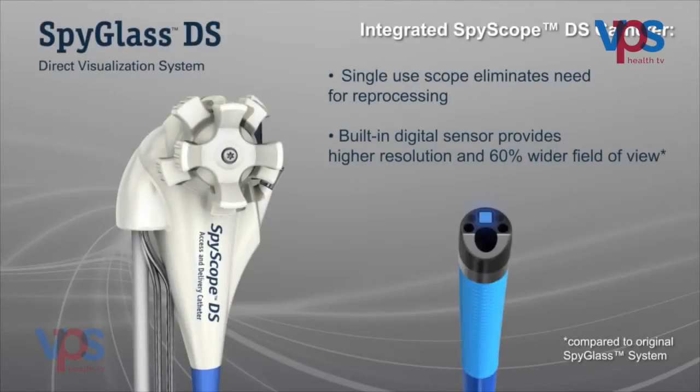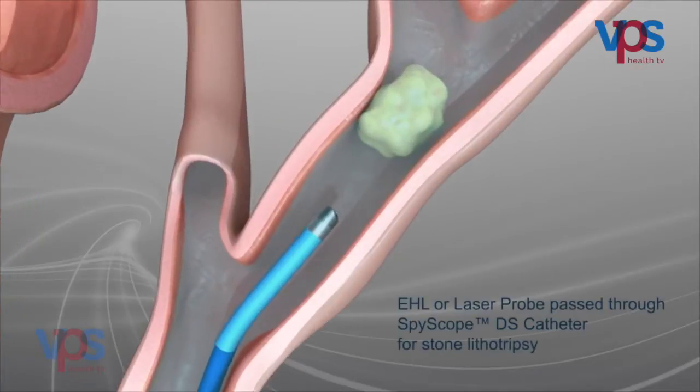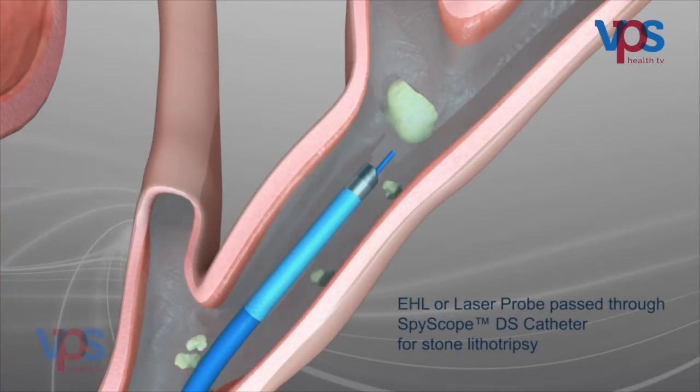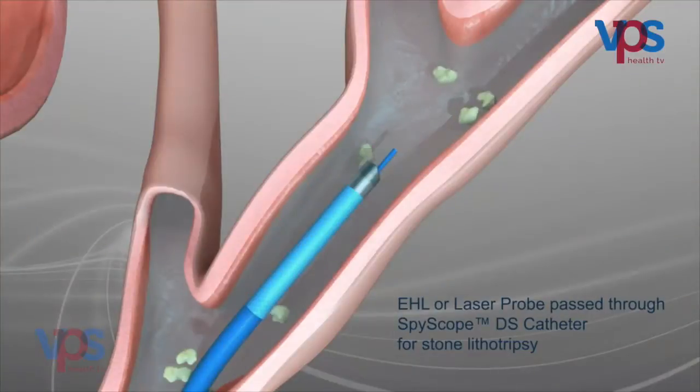Sometimes the stones are quite large. In that case, we use laser lithotripsy with a small endoscope called a spyglass cholangioscope, through which we go into the bile duct and powder the stones with laser. This allows us to remove even very large stones — earlier, these patients used to require surgery.